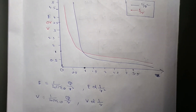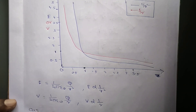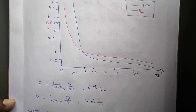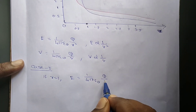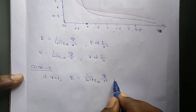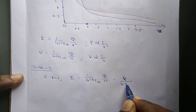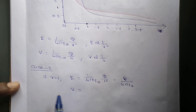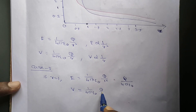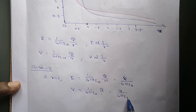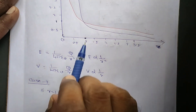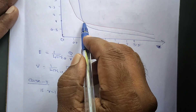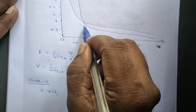I am splitting this graph into three parts. Case 1: if r = 1, the electric field E = (1/4πε₀) × Q/1² = Q/(4πε₀), and electric potential V = (1/4πε₀) × Q/1 = Q/(4πε₀). At r = 1, the electric field and electric potential values are the same — that is why the two lines intersect at that point.